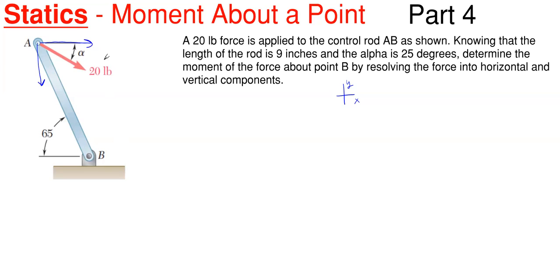Looking at these particular forces, since the angle is off of the horizontal at 25 degrees, when I break this 20 pounds up into its component form it will be 20 cosine of 25 degrees, because the angle is off of the X and cosine is adjacent. This will give me 18.13 pounds to the right.